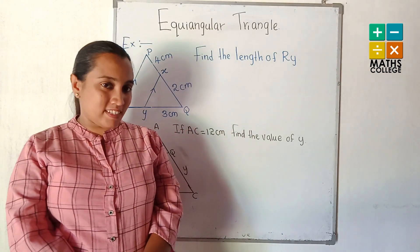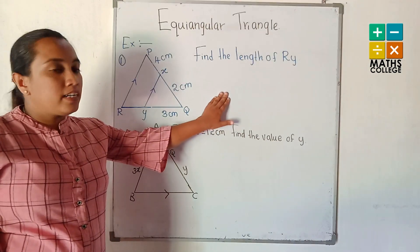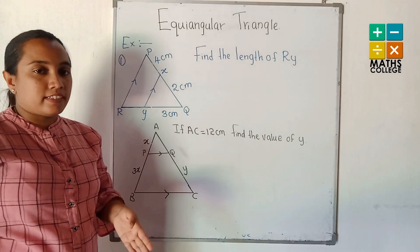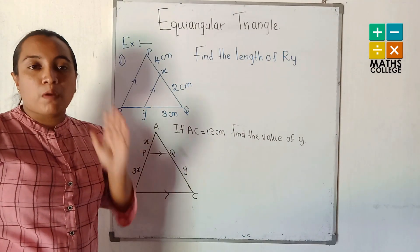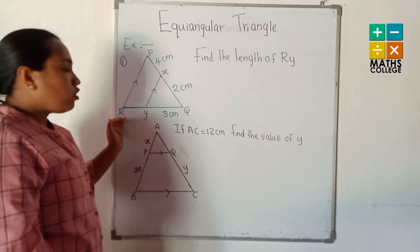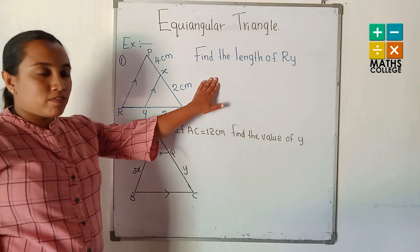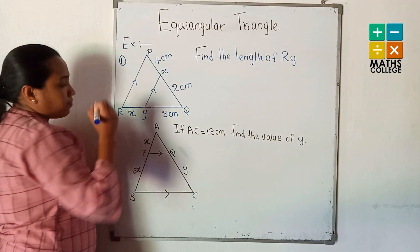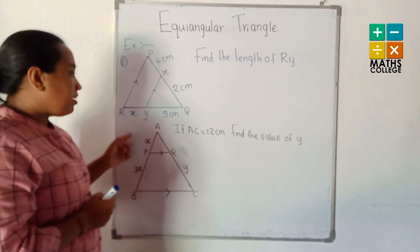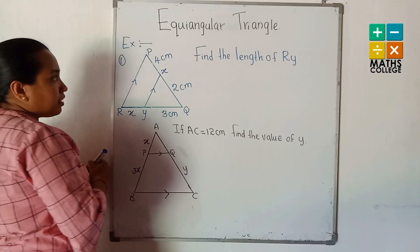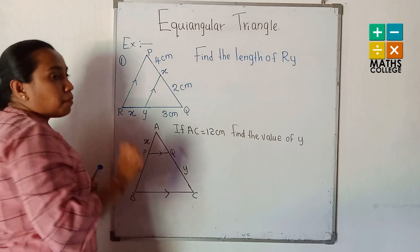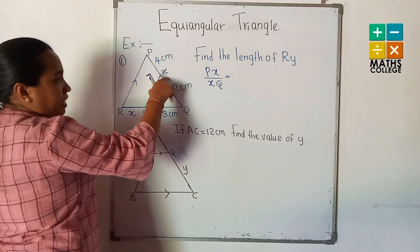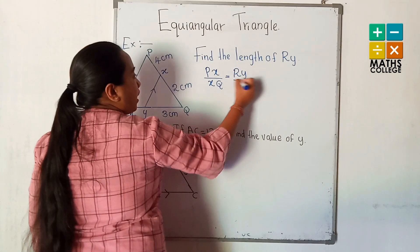Now look at the examples. Using the above theorem — if a line is drawn parallel to the side of a triangle, it divides the other two sides proportionally. Find the length of RY; take RY as X. Write the relationship according to the theorem: since these two lines are parallel, PX divided by XQ equals RY divided by YQ.